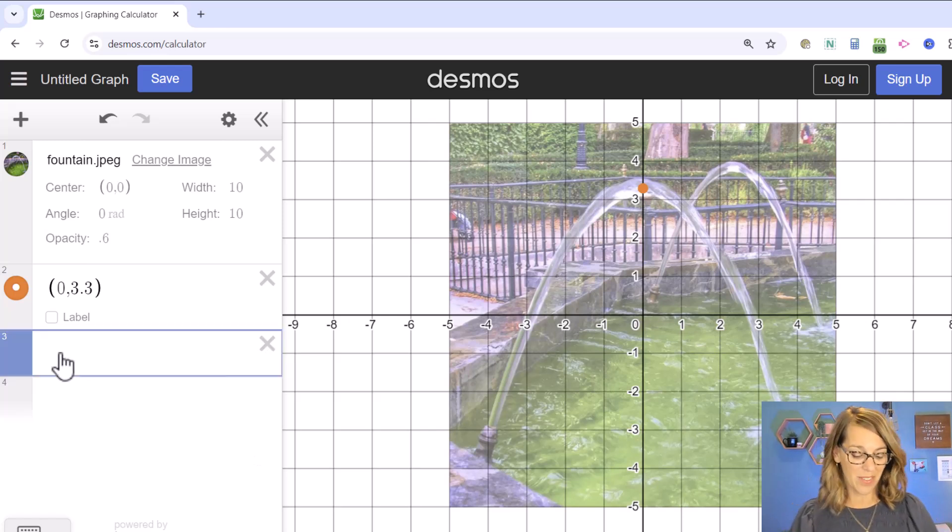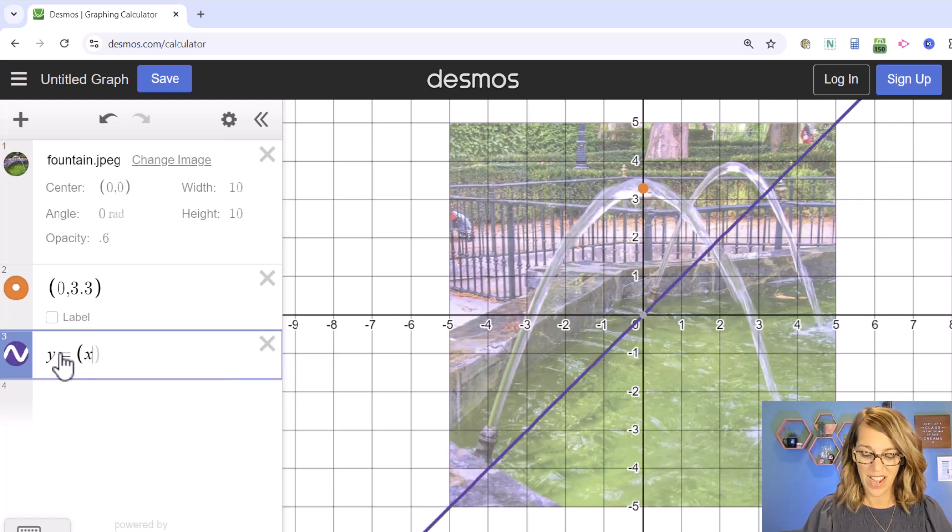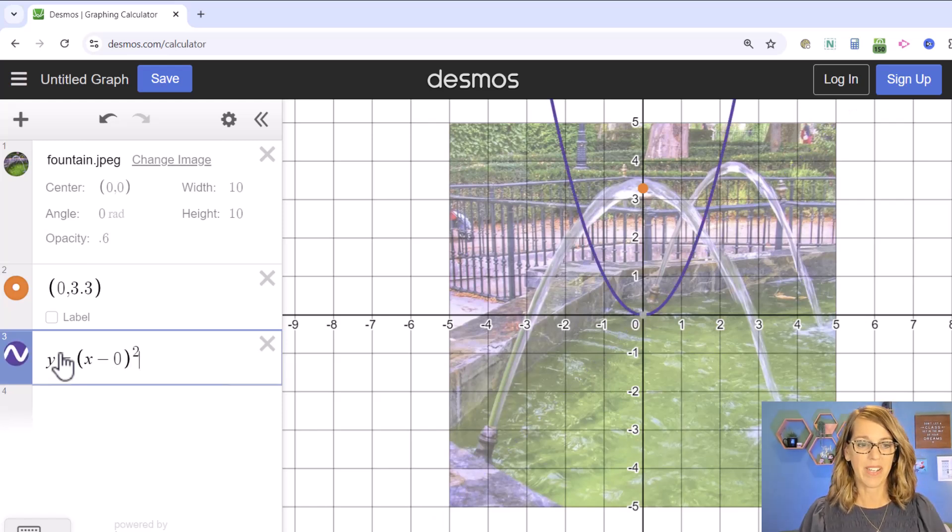So as I start to put this into vertex form, I can type y equals, let's go ahead and leave that lead coefficient out. I'm going to leave the a out for now and then do x minus, I've got 0, you can put the 0 in or you can skip it, but I'll put it in there. So minus 0 plus we decided that vertex was at 3.3.